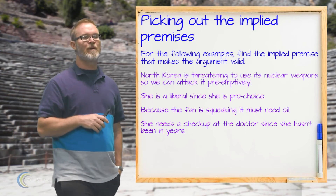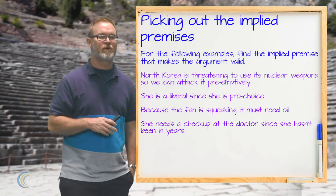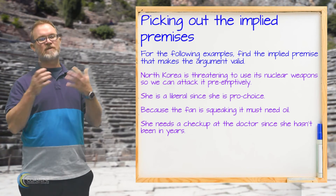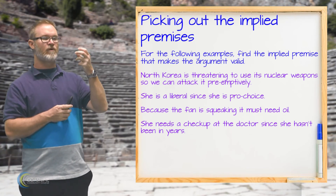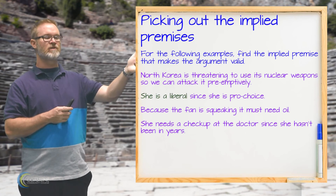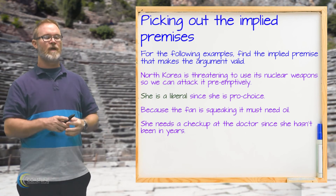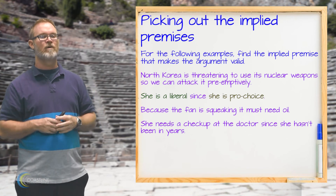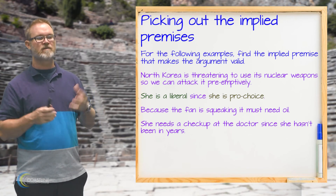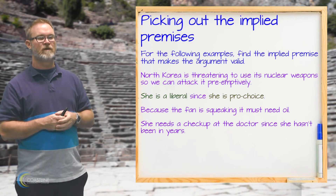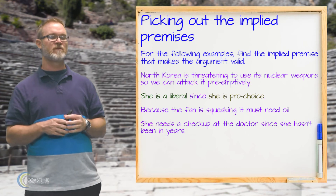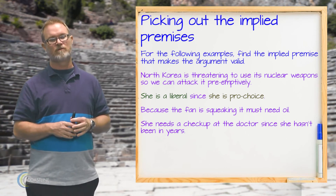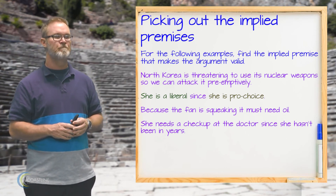Next: she's a liberal since she's pro-choice. The conclusion is that she's a liberal, and the premise is that she's pro-choice. To make that a necessary connection, the implied premise would be something like: anyone who is pro-choice is a liberal.